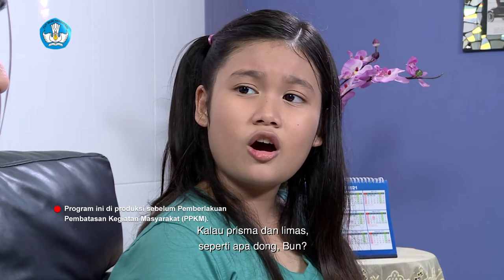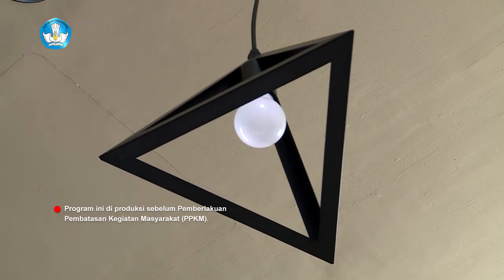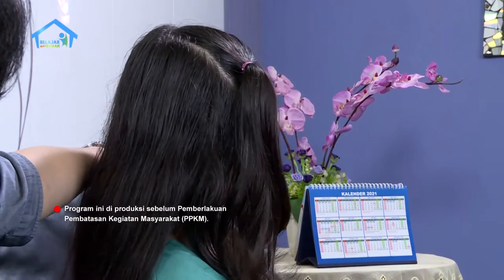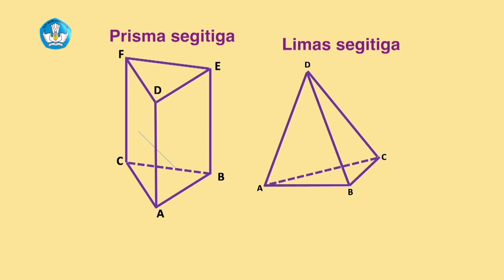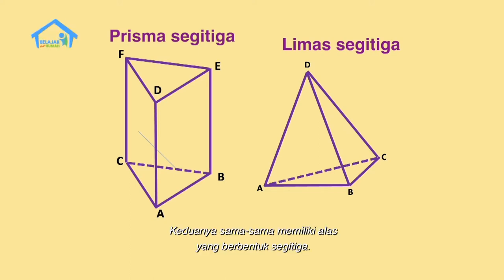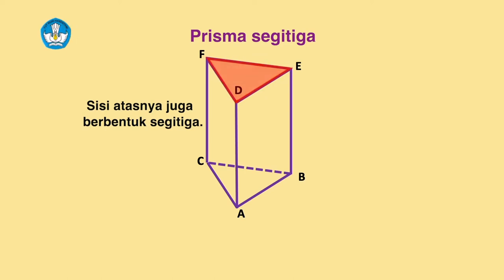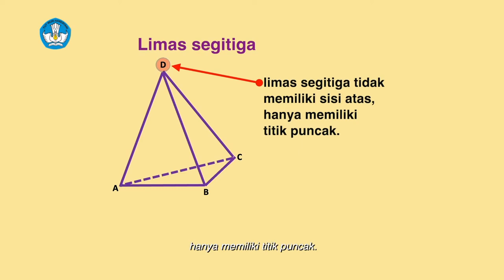Iya, betul. Kalau prisma dan limas seperti apa dong bun? Di rumah kita ada loh benda yang berbentuk prisma dan limas. Perhatikan persamaan dan perbedaan kedua bangun ruang ini. Keduanya sama-sama memiliki alas yang berbentuk segitiga. Pada prisma segitiga, sisi atasnya juga berbentuk segitiga. Sedangkan limas segitiga tidak memiliki sisi atas, hanya memiliki titik puncak.